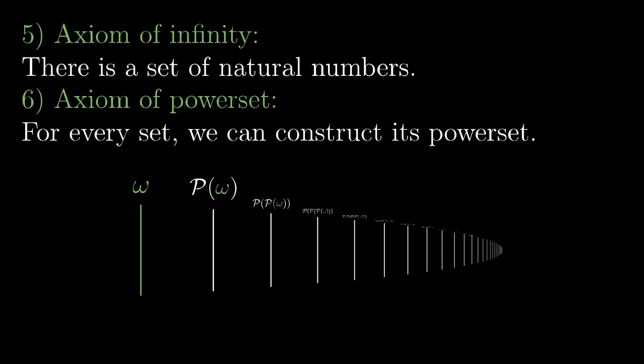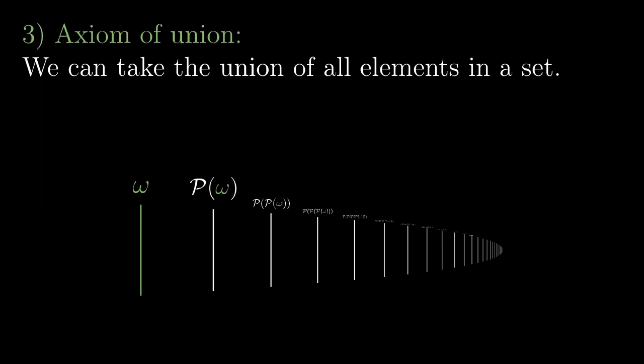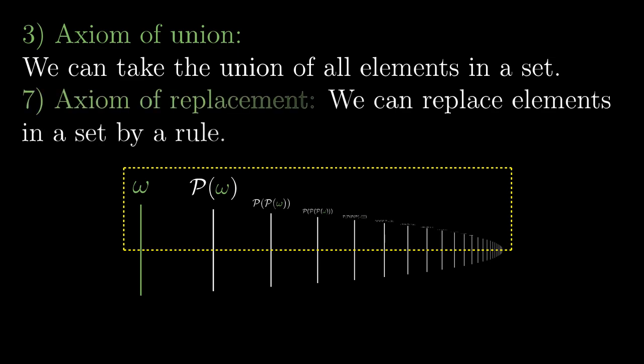The question now is how to take the union of all these power sets. We are going to use again the stronger version of the axiom of union. Whenever we have a set of sets, we can take the union of all of its elements. However to apply this axiom, we first need to pack all of these power sets into a single set. This will be handled by another axiom, the axiom of replacement.